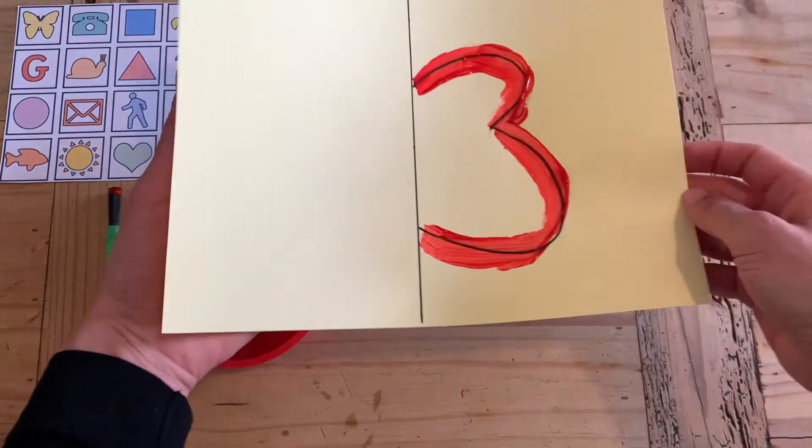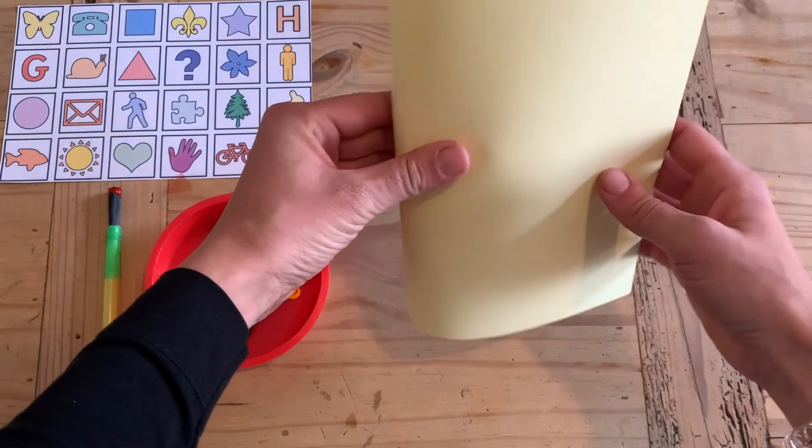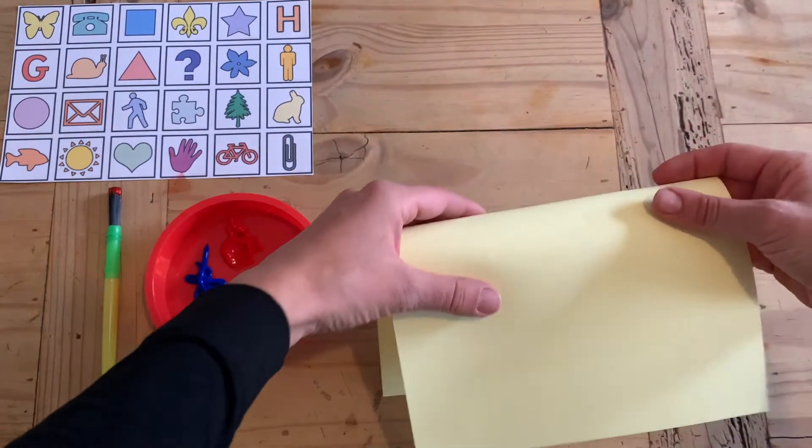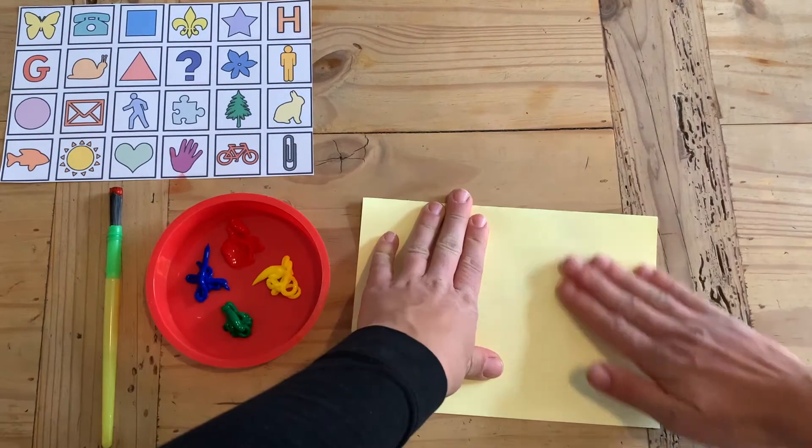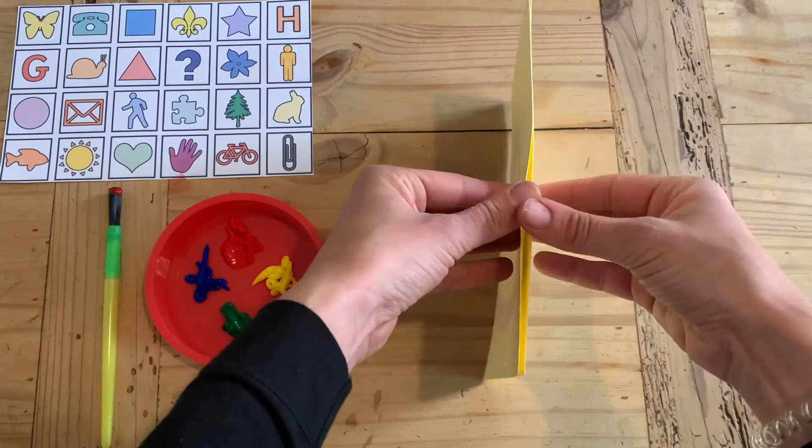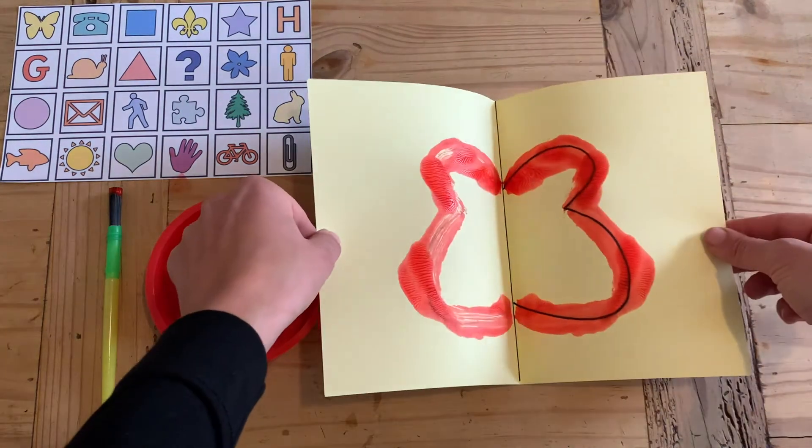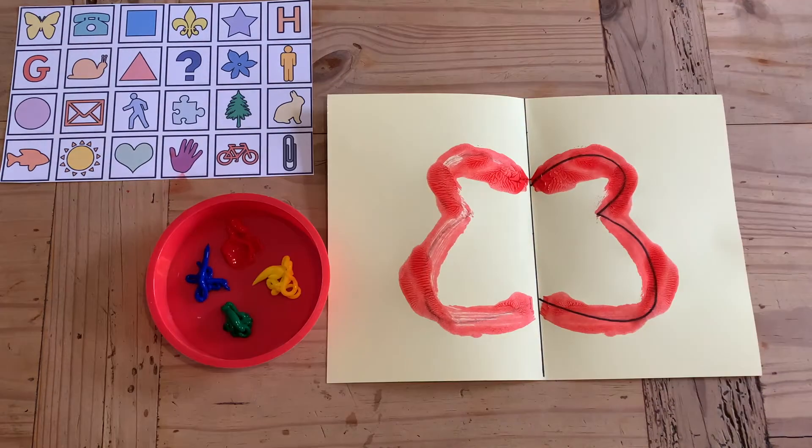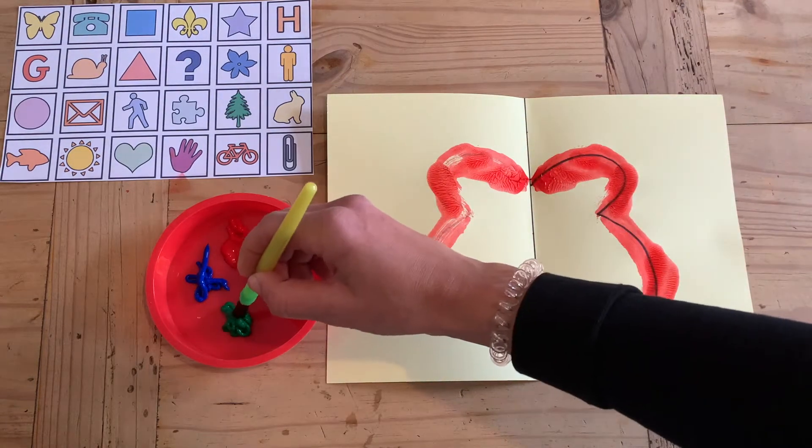Then they can fold the piece of paper in half and press down firmly so the paint spreads. They'll then see that when they open the piece of card they've got a symmetric shape. It's the same on both sides. They then might want to add their own little details or decoration.